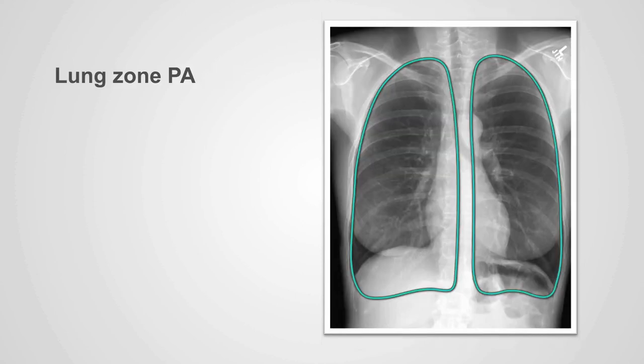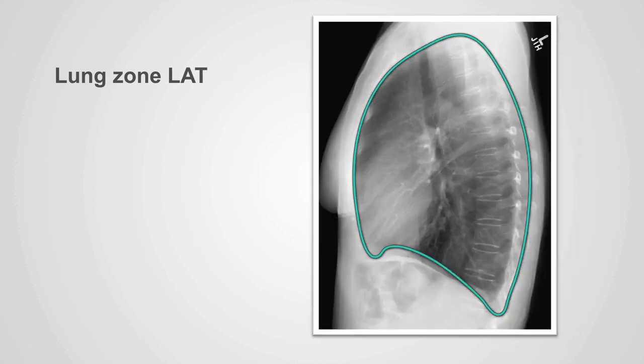The lung zone is the area in the thorax that contains the lungs and corresponds to the air-filled region between the ribs and the mediastinum medially. On the PA x-ray, the lung zone has lateral, medial, superior, and inferior borders. On the lateral x-ray, the lung zone has anterior, posterior, superior, and inferior borders. The lung zone occupies a large percentage of the thorax.